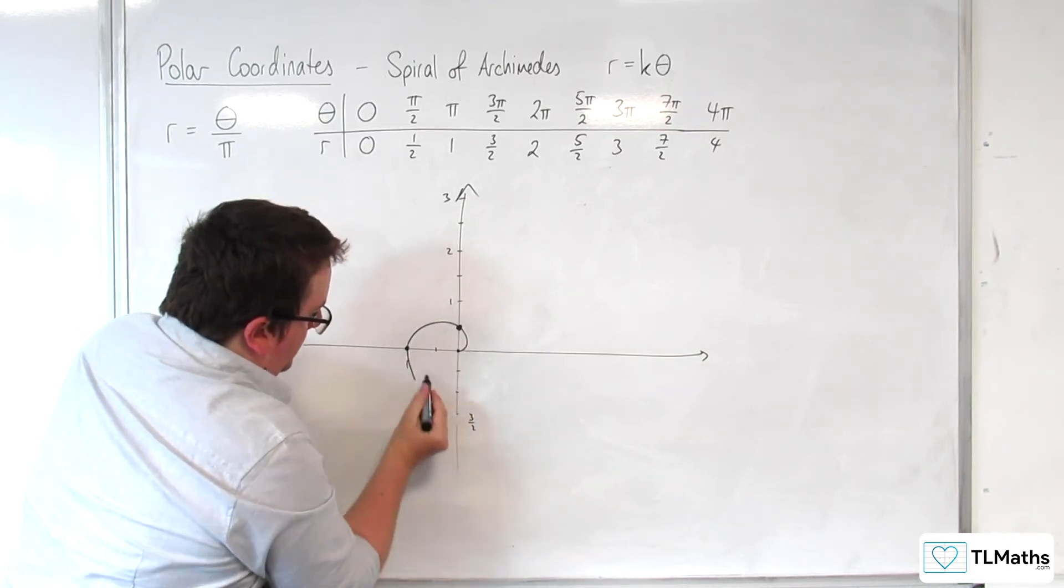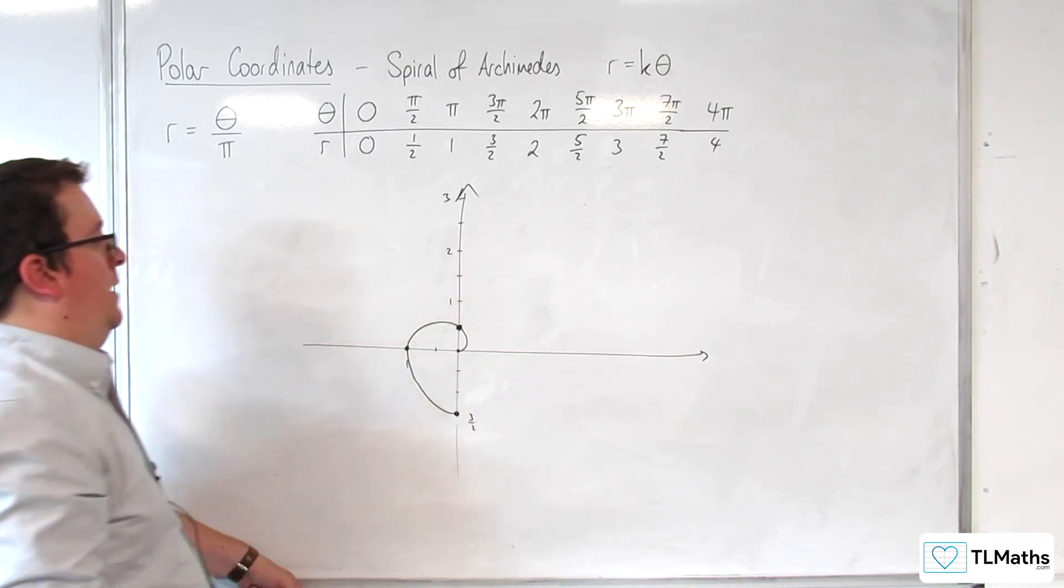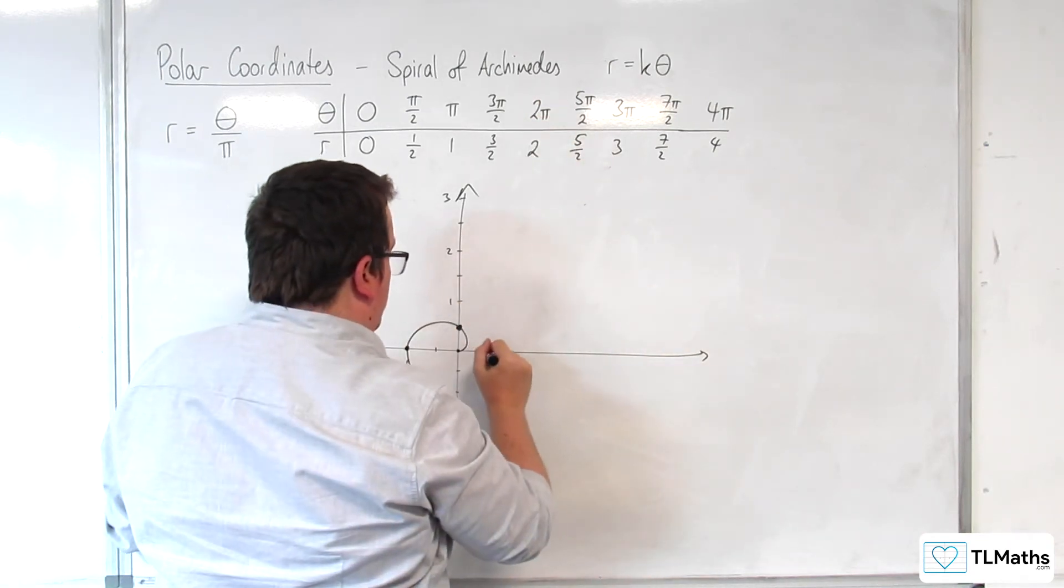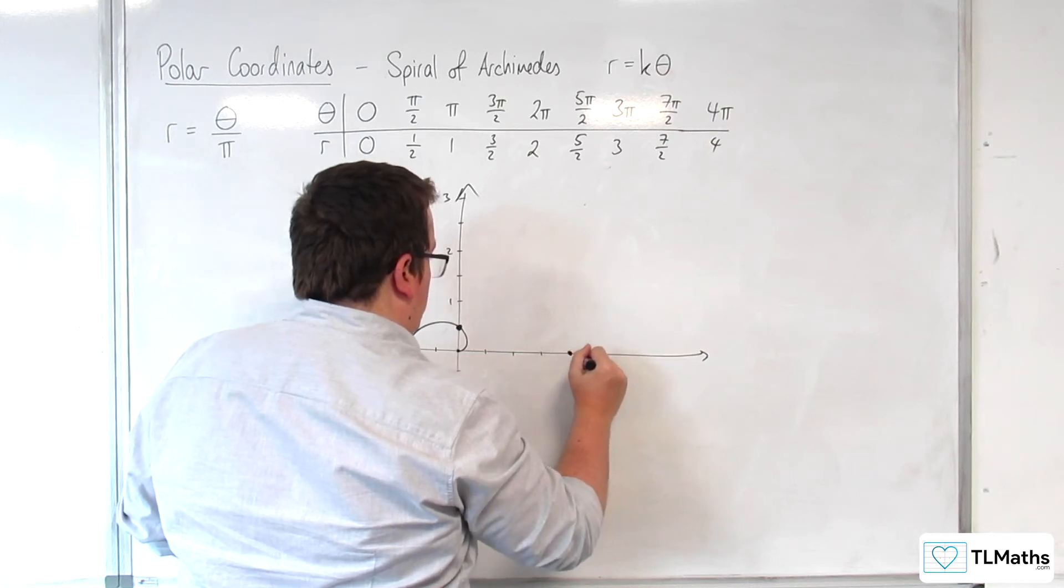Let's try that again. OK. Then at theta is 2 pi, we're at 2. So, 1 half, 1, 2. There we are.